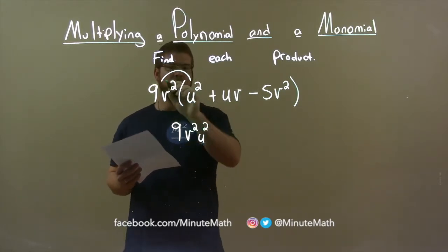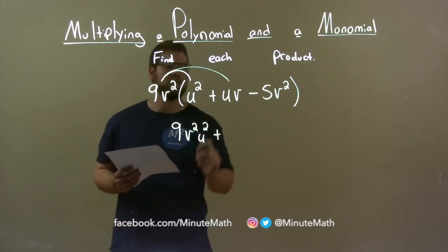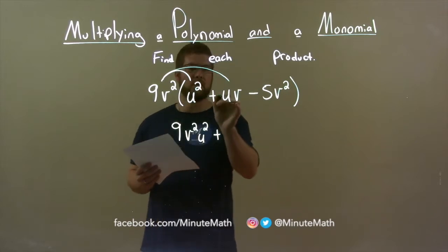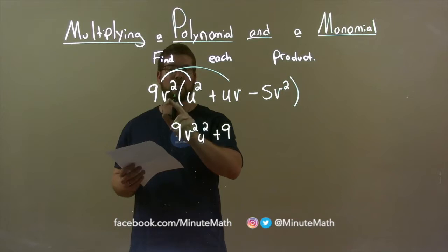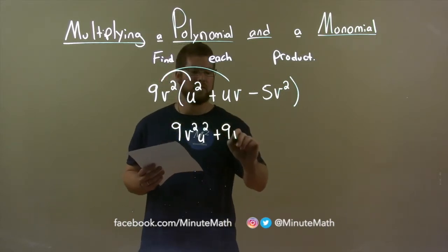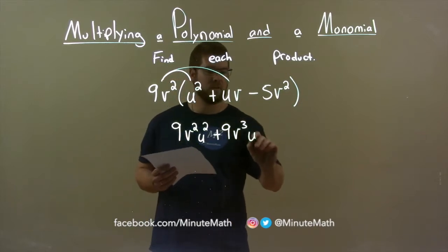Now we take 9v squared times uv. The plus sign separates the two terms, so we're good there. Again, coefficients 1, 9 times 1 is 9. Now, v squared times 1v is v to the third power, and the u just comes down.